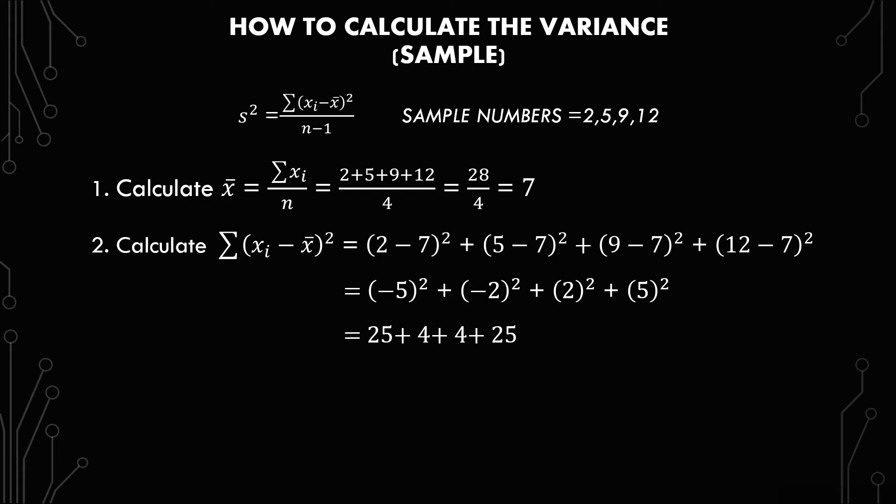Remember, when it comes to negatives, when you multiply a negative with another negative, you get a positive. Finally, we get 58 when you add them all up.